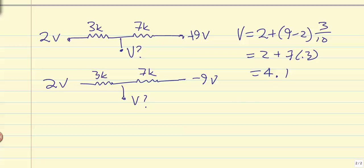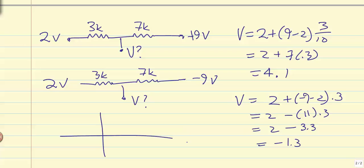The second case is V equals 2 plus minus 9 minus 2 times 0.3. This becomes equal to 2 minus 11 times 0.3, or 2 minus 3.3, or minus 1.3. So we're going to have thresholds of minus 1.3 and plus 4.1.